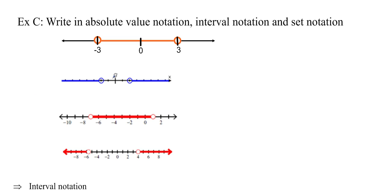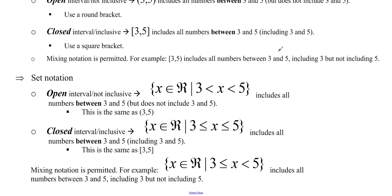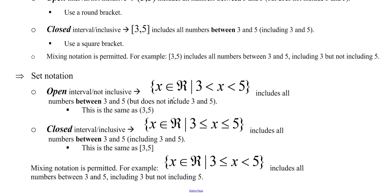That was absolute value notation. Now let's talk about interval notation and set notation. We'll start with set notation since you're probably fairly familiar with it. Set notation uses a curly bracket — try to draw it properly, perhaps with three strokes so it looks like a real curly bracket.